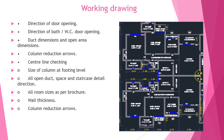In working drawings, the direction of door opening has to be marked. Direction of the bath and WC door opening has to be marked; duck dimension and open dimension have to be given. Column reduction arrows, centre line checking, size of the column at the footing level, all open duct space and staircase details, all room sizes as per the sales brochure, and wall thickness must be provided. The adjoining drawings show how room dimensions and door and window openings are to be marked.